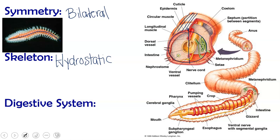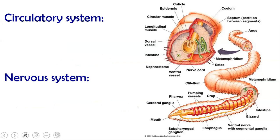Its digestive system has a separate mouth and anus, which means we have a complete digestive system. For its circulatory system, it is closed, meaning that the blood stays in vessels. You can see that our worm has a dorsal vessel and a ventral vessel, as well as vessels going around the sides in each segment.